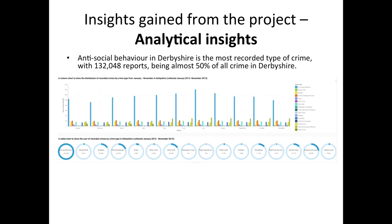The first insight that shocked me was how many antisocial behaviour reportings happen in Derbyshire. This data was collected between January 2013 and November 2015. You can see on this radial chart that 132,000 antisocial behaviour crimes were reported in less than two years — that is really shocking.